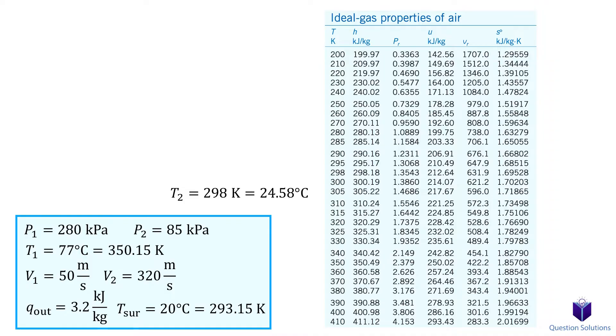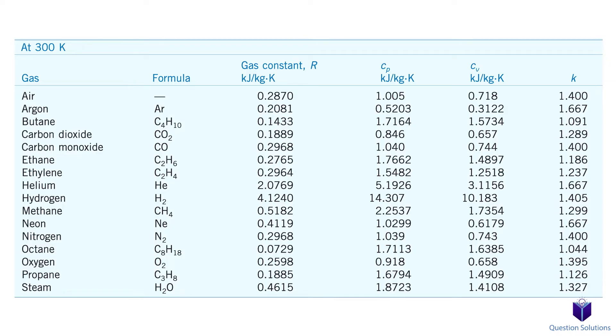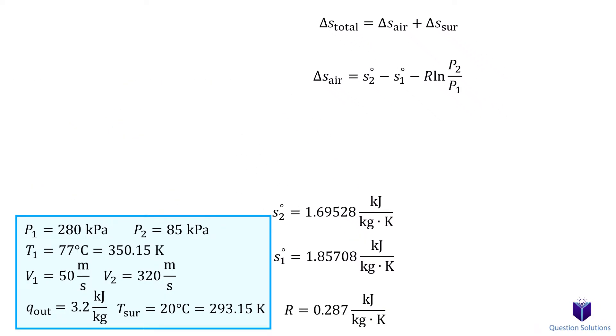The standard entropy values can be found using our table with the temperature values we found. Our final temperature was 298 Kelvin. And our initial temperature was 350 Kelvin. So the values we need are right here. The gas constant of air is also found in a table. And we're given the initial and final pressures. Let's plug our values in and solve.